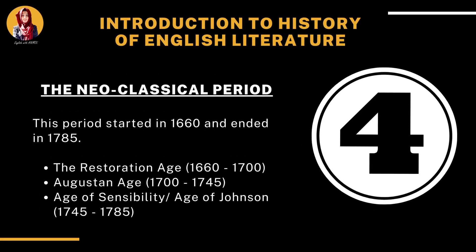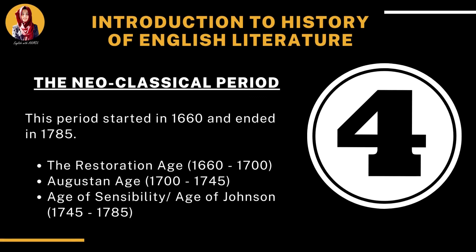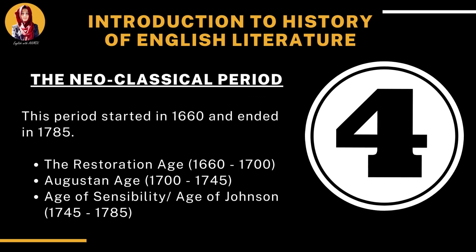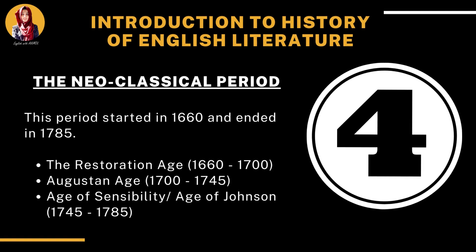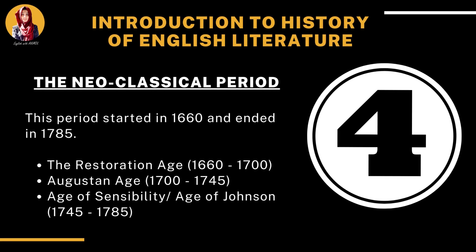The fourth period is called the Neoclassical period, starting in 1660 and ending in 1785. The Neoclassical period is further divided into the Restoration age, Augustan age, and the Age of Sensibility or the Age of Johnson.